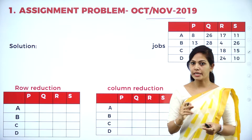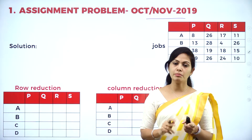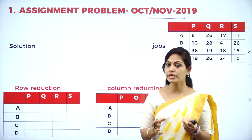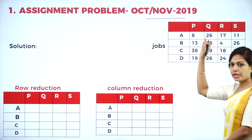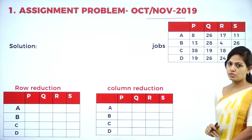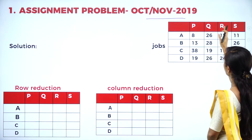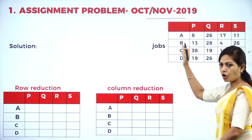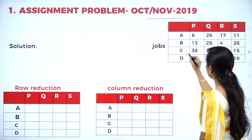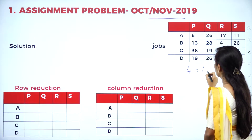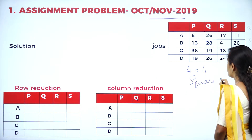The first step in the Hungarian method is to check whether it is a balanced or unbalanced problem. The number of columns should be equal to the number of rows to call it balanced. Here I have four columns and four rows, so it is a balanced problem — four equals four, it is a square matrix. Now I can proceed.